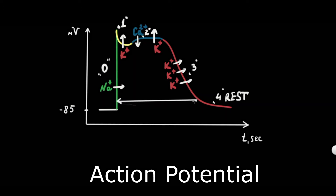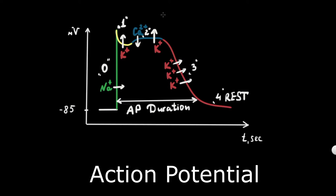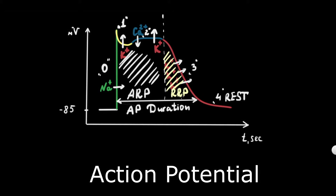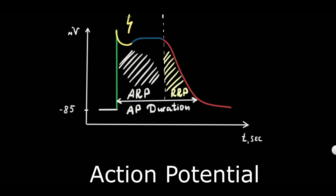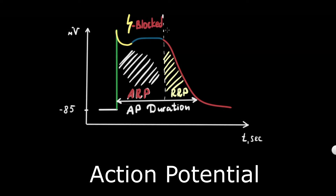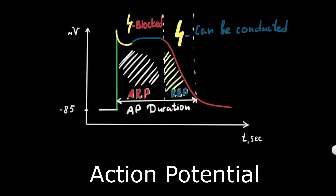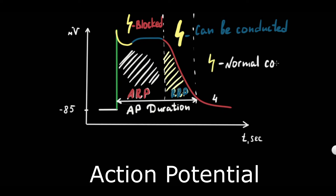The duration of the action potential consists of absolute and relative refractory periods. From the beginning of Phase 0 to the beginning of Phase 3 is the absolute refractory period — all stimuli that arrive during this period are blocked. During Phase 3, the cardiac cells have a relative refractory period, during which a second action potential can be evoked only if the stimulus strength is increased; a normal impulse cannot be conducted. In Phase 4, any normal impulse can be conducted.